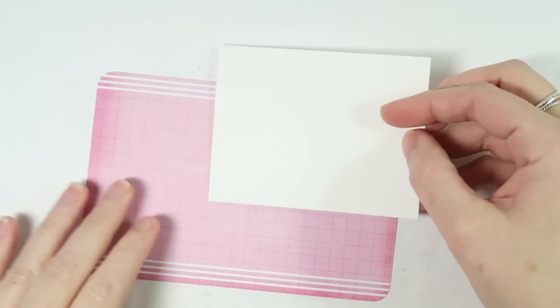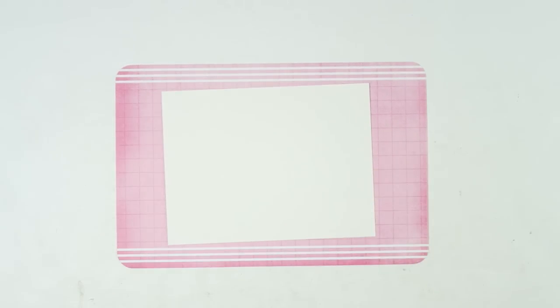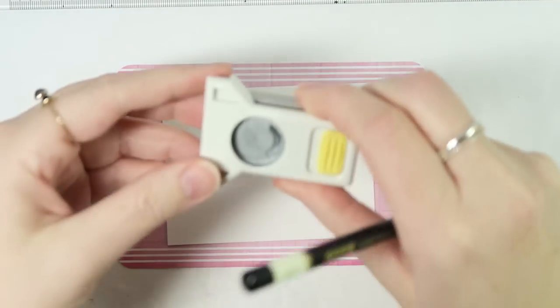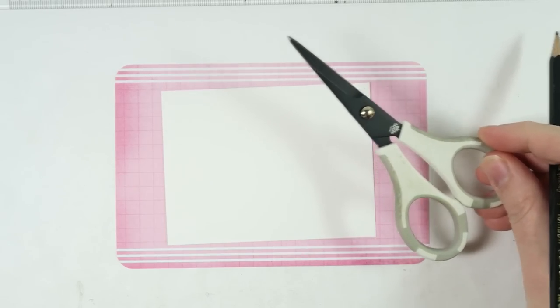To create your own template, you will need a piece of cardstock that is three inches by four inches. You'll need a pencil, a ruler, as well as a hole puncher. If you prefer to have your cards with rounded corners, you can also grab a corner rounder punch. And you will also need a pair of scissors.